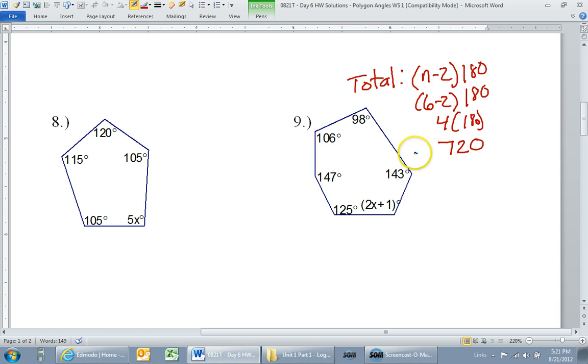So that's going to be 720. Okay, so that's the total. The total degrees is 720. Now, meanwhile, if I add up all of these angles, that should equal 720.